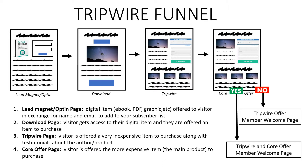So you're giving away something in order to get something from them. The second piece is the download page, and that's where the visitor comes to access their free digital item that you offered them on that first page. There's a button on this download page that sends them to the tripwire offer.